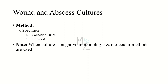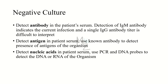When culture is negative, immunologic or molecular methods are used. Serologic methods detect antibody in the patient's serum — IgM antibody indicates a current infection, while a single IgG titer is difficult to interpret as it may represent current or previous infection, though in certain diseases a sufficiently high single titer can serve as presumptive evidence. Antigen detection uses known antibodies to detect organism antigens — for example, fluorescent antibody to detect antigens in tissue or latex agglutination to detect capsular polysaccharide antigens in spinal fluid. Nucleic acid detection uses PCR and DNA probes to detect the DNA or RNA of the organism.